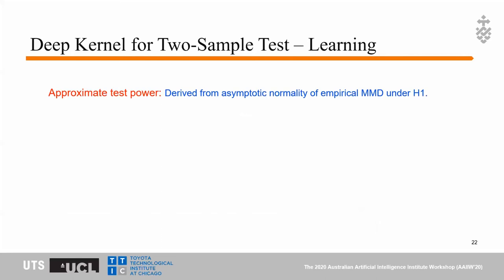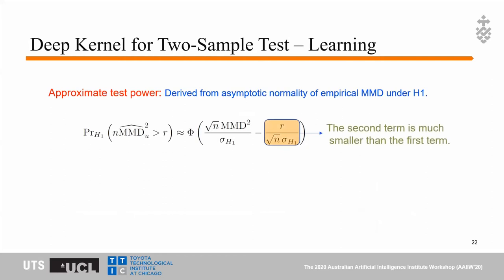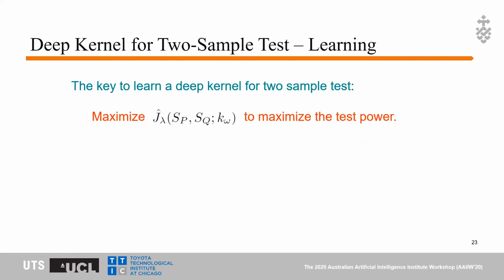To optimize the deep kernel, we use the asymptotic distribution of empirical MMD. In this equation, the left side represents the test power of MMD and the right side is the approximate test power. Because the second term is much smaller than the first, we want to maximize the first term directly — a large first term means high test power. We use MMD-squared over sigma_H1 to estimate this term and maximize the objective J_lambda_hat, using a weighted statistic to estimate sigma_H1.